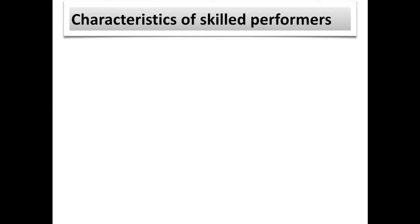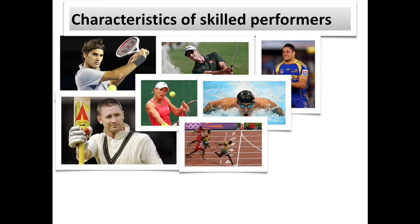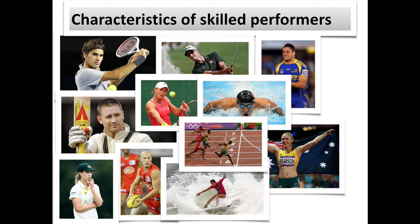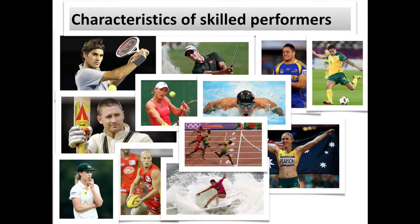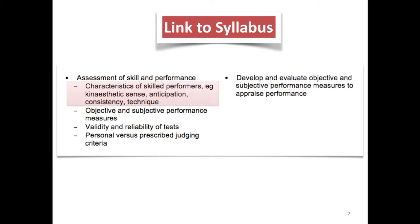This presentation will address the characteristics of skilled performers, and it will focus specifically on the four main observable differences between skilled athletes and unskilled athletes. If we take a closer look at the PDHPE syllabus, you'll notice that there are four main characteristics, and they include kinesthetic sense, anticipation, consistency, and technique.